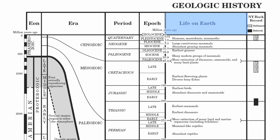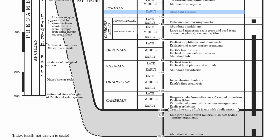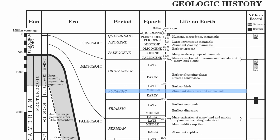Next to your epochs, you have life on Earth. Just be patient — there's a lot of information here but it's easy to read once you know what you're looking for. For example, early trilobites: bring it across to the left — whatever epoch and period it hits gives you early Cambrian. Earliest insects: late Silurian. Abundant reptiles: early Permian. Abundant dinosaurs and ammonoids: middle Jurassic. Mass extinction of dinosaurs, ammonoids, and many land plants: end of the Cretaceous. Humans, mastodons, and mammoths occur during the Pleistocene epoch or the Quaternary period.